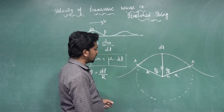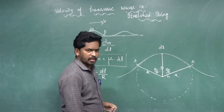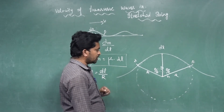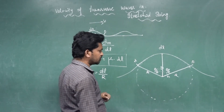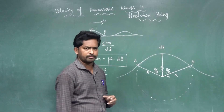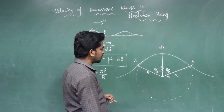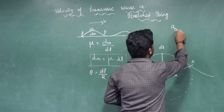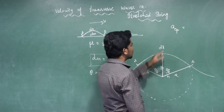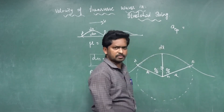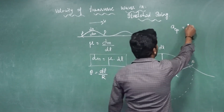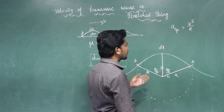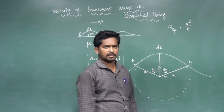Next, I want to take the centripetal acceleration. Why are we taking centripetal acceleration? Because a centripetal force is acting. The centripetal acceleration A_cp is equal to V squared divided by R — this is the standard formula relating velocity and centripetal acceleration. So A_cp equals V squared over R.